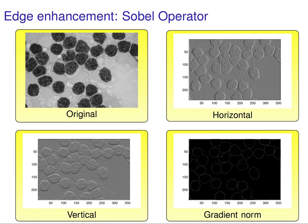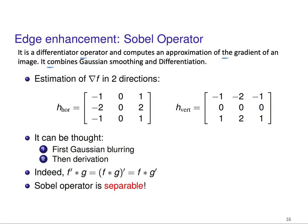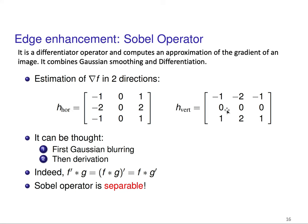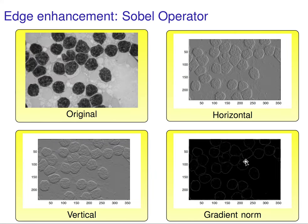Looking at an example of edge enhancement using the Sobel operator: this is our original image. Applying the horizontal Sobel kernel — minus one, minus two, minus one; zero, zero, zero; one, two, one — produces one result image. Applying the vertical Sobel kernel produces another result. There is also a gradient norm function available in MATLAB that gives you the combined edges, allowing you to clearly see the boundaries between cells. This is the first operator for edge enhancement, and it is based on first-order differentiation.